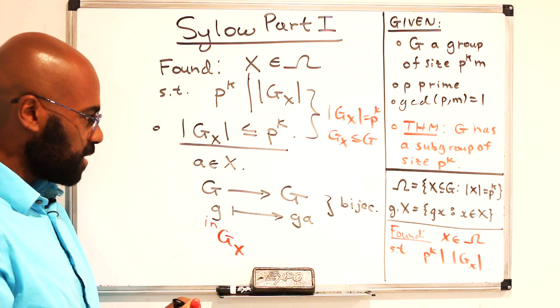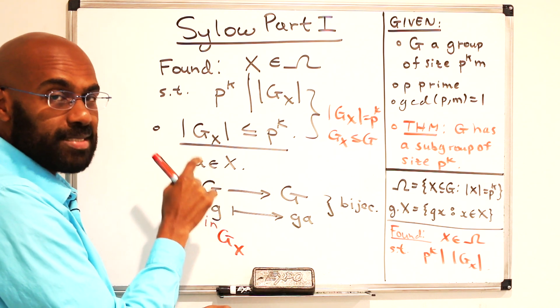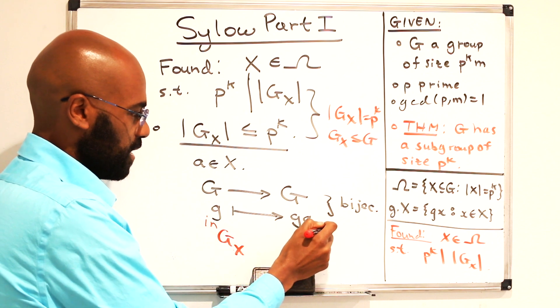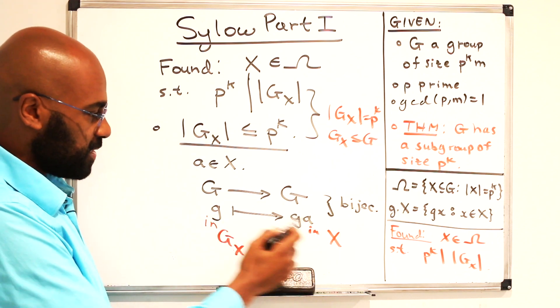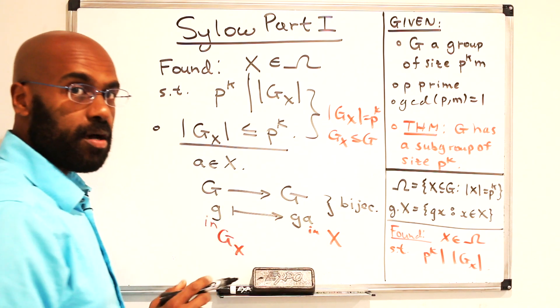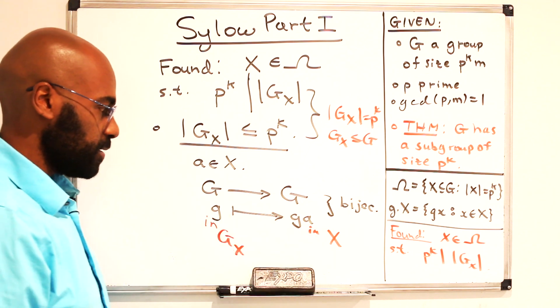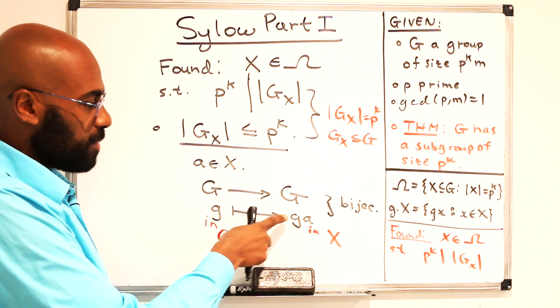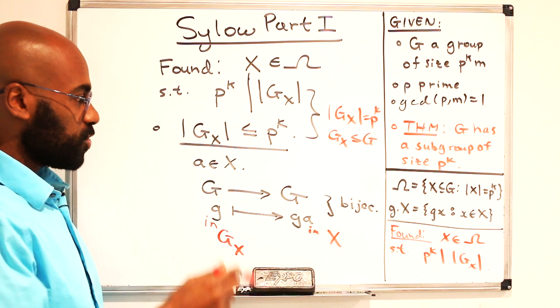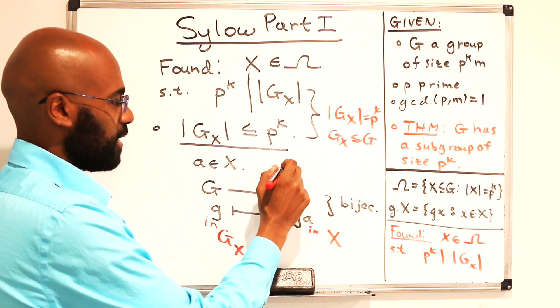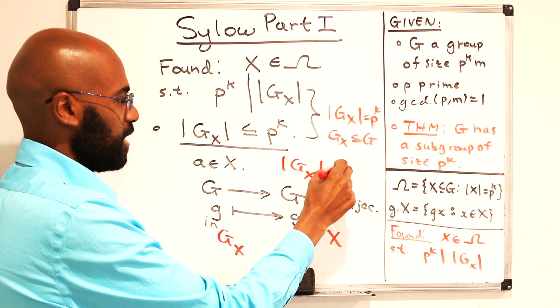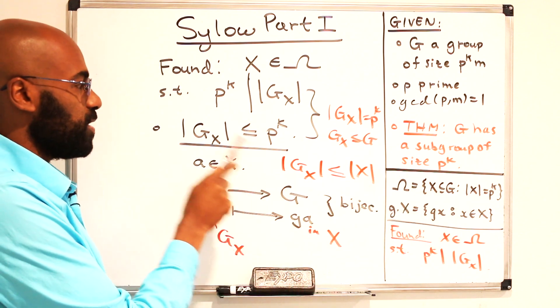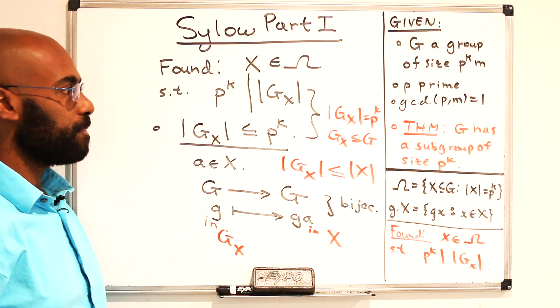But what happens to elements in the stabilizer when we perform this? So if this thing is in the stabilizer of capital X, then that means when we hit it with an element of capital X, it stays in capital X. So if g is in the stabilizer, then this thing is in capital X. So the outputs of things from the stabilizer of capital X are things that are inside of capital X. But this thing is supposed to be a bijection. So that means that there's a bijection between the stabilizer of capital X and some subset of capital X itself. So this bijection on G allows us to show that the size of the stabilizer of X is actually less than or equal to the size of X itself. And the size of X itself is p to the k. So this thing has size less than or equal to p to the k.